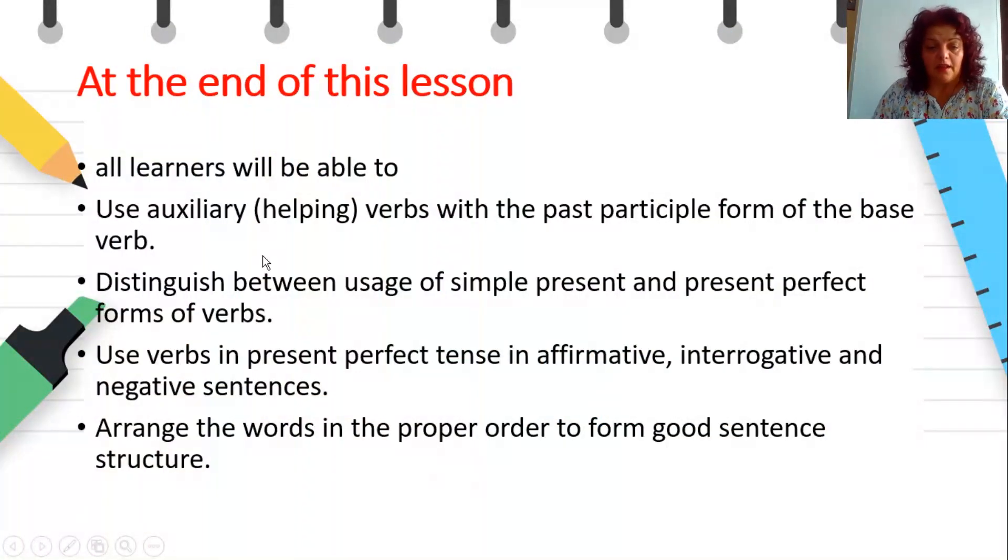At the end of this lesson, all learners will be able to use the auxiliary helping verbs with the past participle form of the base verb, to distinguish between usage of simple present and present perfect forms of the verb. We use verbs in present perfect tense in affirmative, interrogative, and negative sentences, and how to arrange the words in the proper order to form good sentence structure.